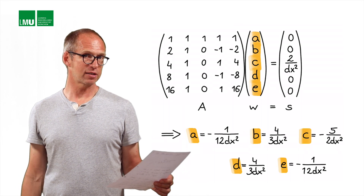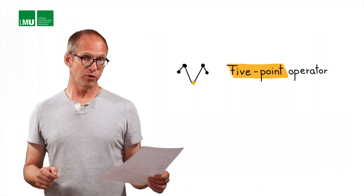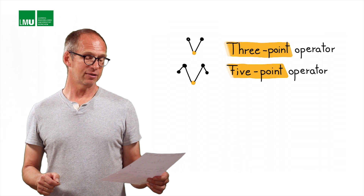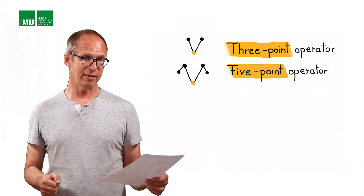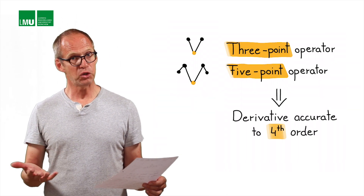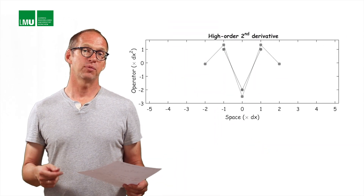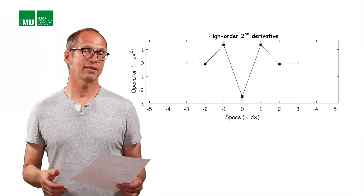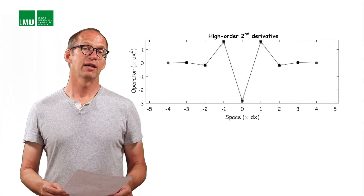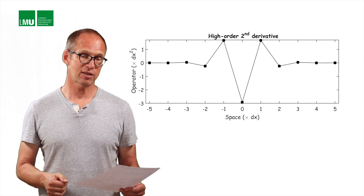It is easier to look at this graphically. We now have a five-point operator — two more points than before. The original three-point operator is also shown. This five-point operator is now accurate to fourth order. We can use even more points, and as shown here, adding more and more points produces operators that are longer and longer, and more and more accurate.